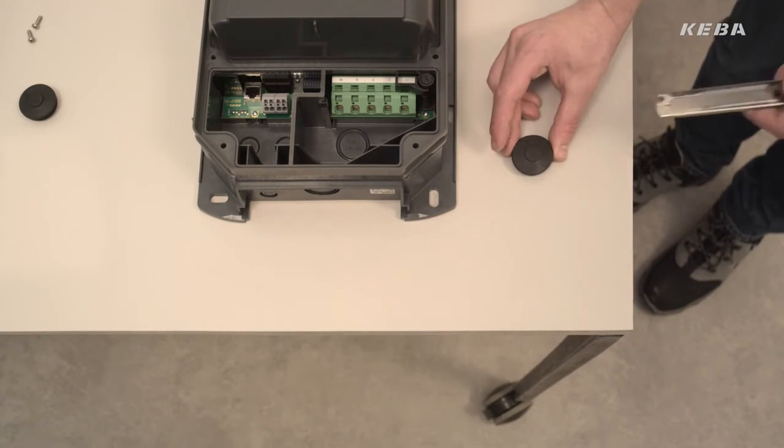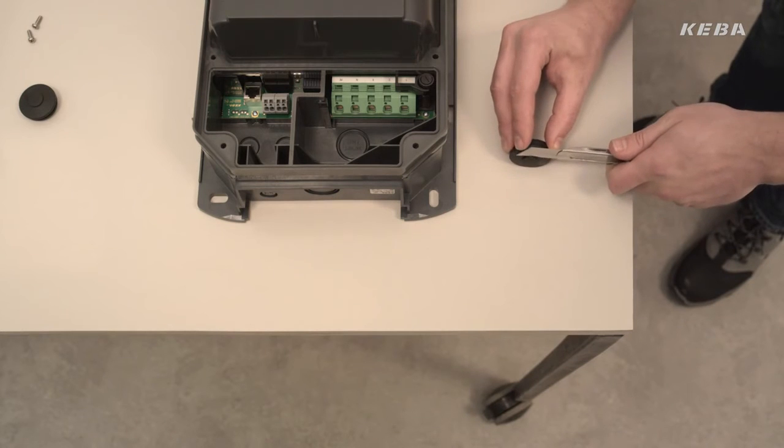The cable inlet for the wallbox is either surface mounted from above or flush mounted from behind.